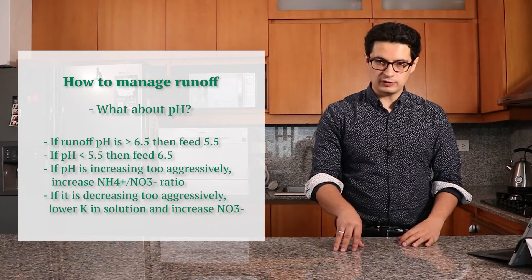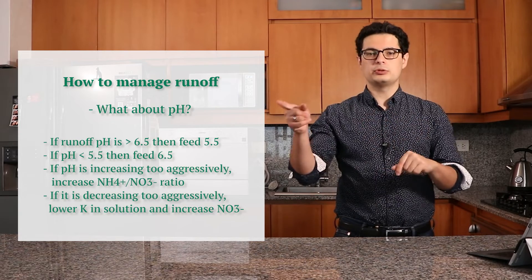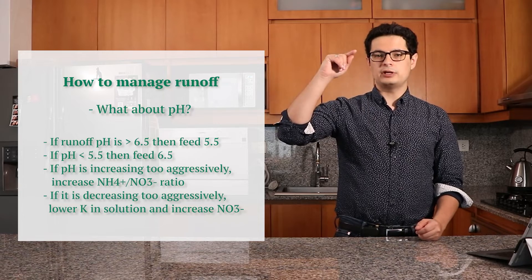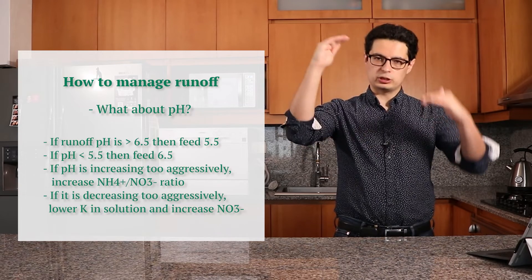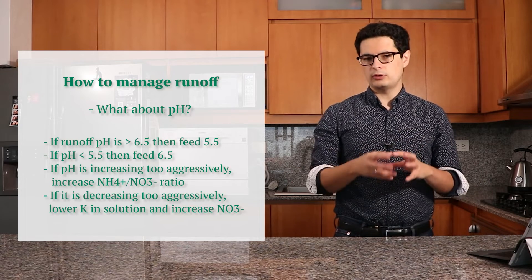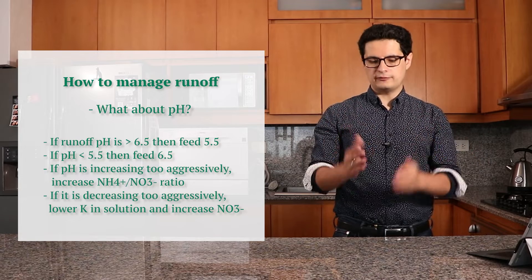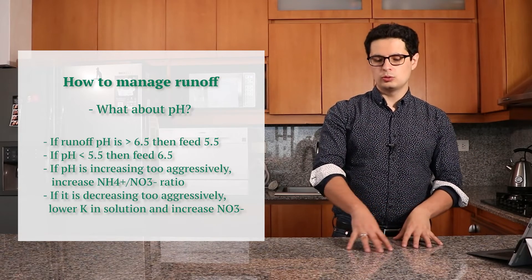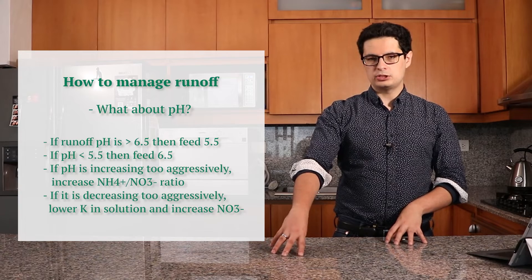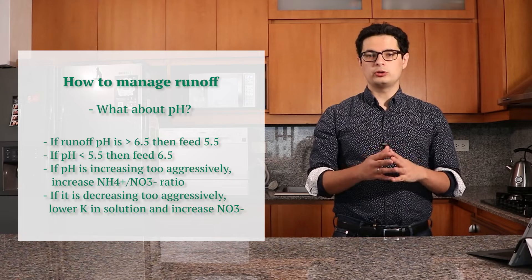For other plants you can definitely go higher, although you might then face the opposite problem — acidification of the media. When you go to a pH that is too high, you'll face problems mainly related to iron. When you go to pHs that are too low, you'll mainly face micronutrient toxicities — most commonly manganese toxicity. If your pH drops below 5.5 or approaches 5.5, then you want to start feeding at 6.5. If the runoff is 5.5, feed at 6.5; if the runoff is 6.5, feed at 5.5. Normally you will start feeding at pH 6, which is a very normal starting value.